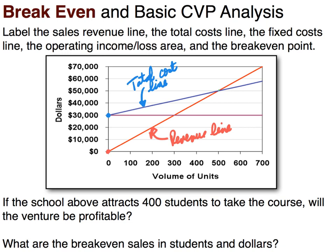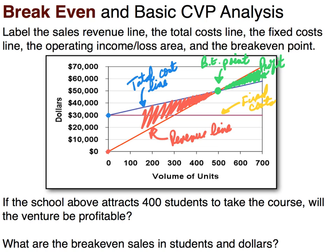Where your revenue line and your cost line cross, that is called your break-even point. Going back to the total cost line, the purple line that goes straight across represents our fixed costs. Everything above the break-even point is called the profit area. Everything below the break-even point is called the loss area.